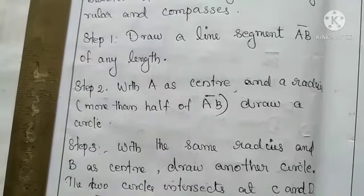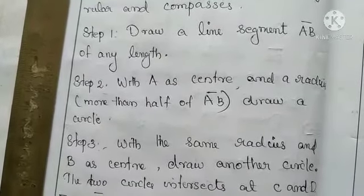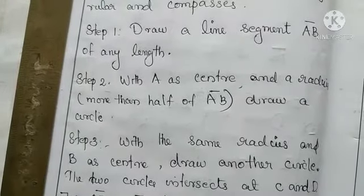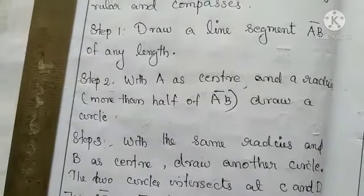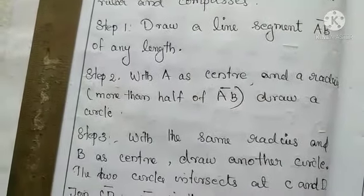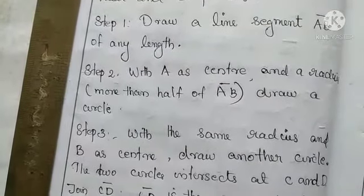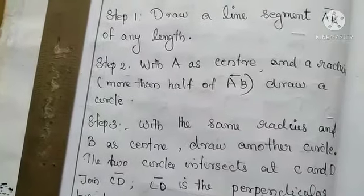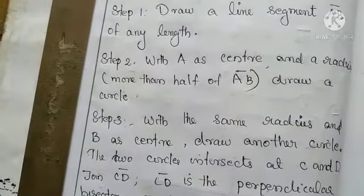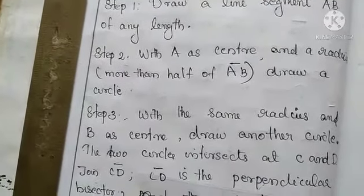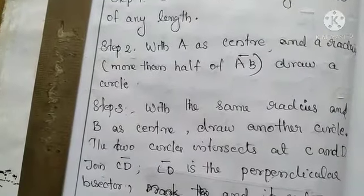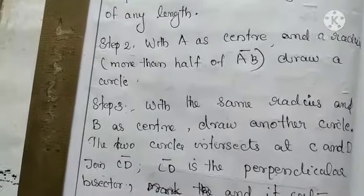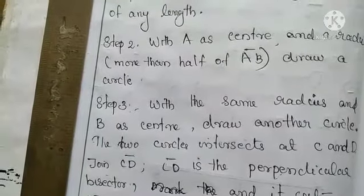With A as center and a radius more than half of AB, draw an arc. I will show how we take more than half of AB. Then again with B as center, draw an arc with the same radius. These two arcs will meet at two points — let them be C and D. Then CD will be the perpendicular bisector.